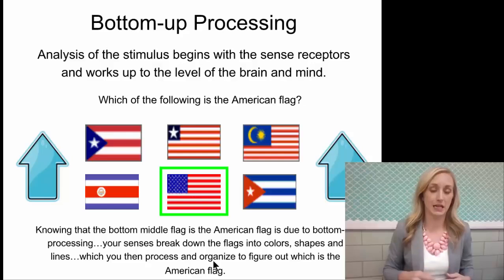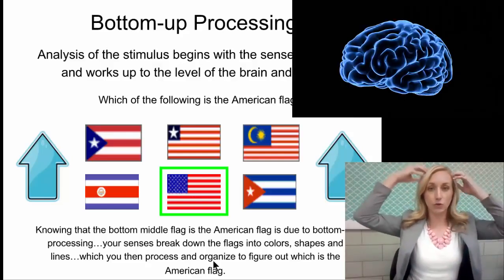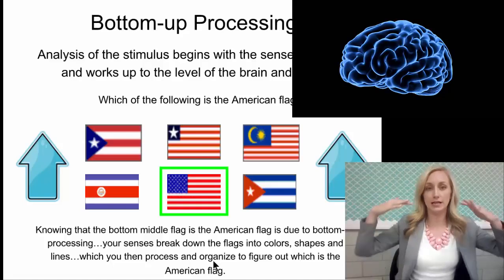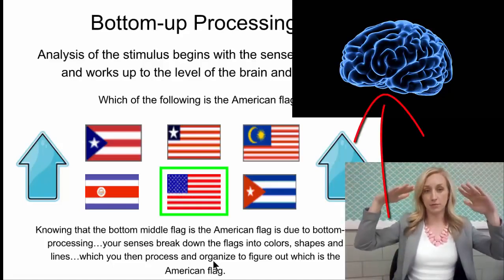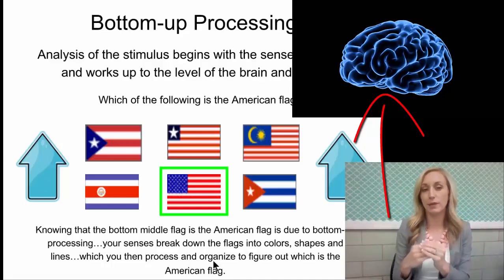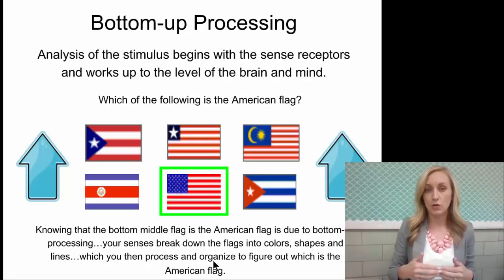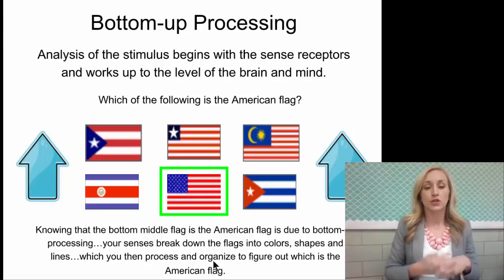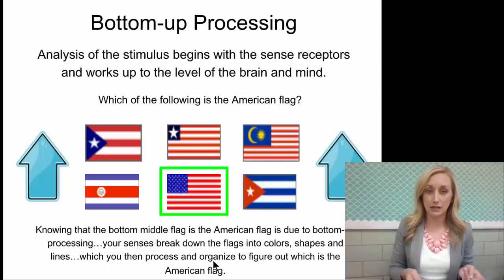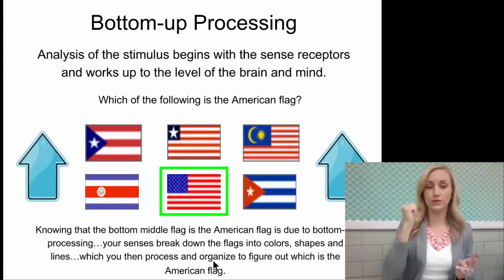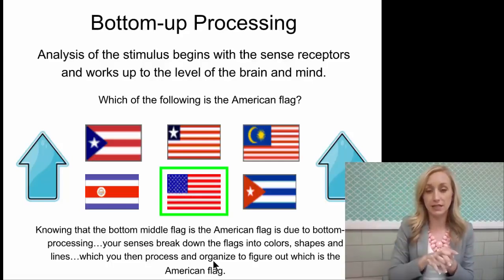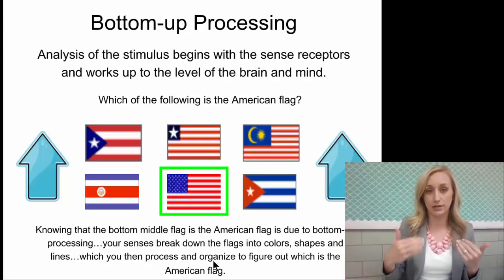Let's talk about bottom-up processing. Think of your brain and higher-order thinking, like interpretation, as the top. Bottom-up processing refers to more basic things — the analysis of any stimuli that begins with the sense receptors and works up to the level of the brain and mind. For instance, if the question is which of the following is the American flag, you will know the bottom middle flag is the American flag due to bottom-up processing, because you look at each of the flags, their colors, shapes, and all the different things about them, and then process and organize to determine which one is the American flag.